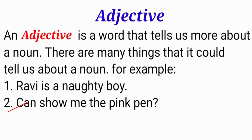Now we will see the second sentence: 'Can you show me the pink pen?' In this sentence, the word 'pink' is used as an adjective. The question that arises is: which pen? So here, 'pen' is the noun and 'pink' is the adjective telling us more about that noun.